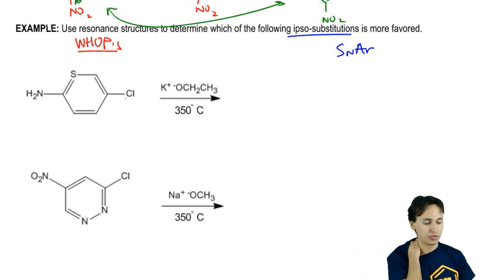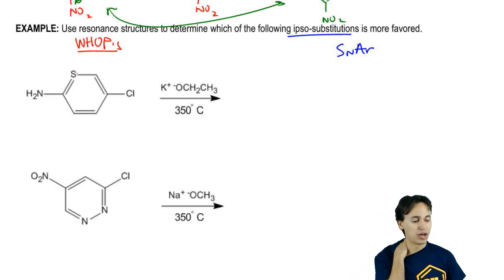Let's analyze the first one. The first one, I've got a heteroatom on the meta. That's not really going to help me.